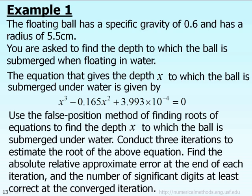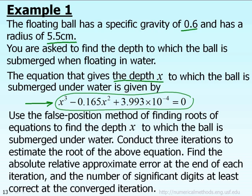A floating ball has a specific gravity of 0.6 and a radius of 5.5 cm. You are asked to find the depth to which the ball is submerged when floating in water. For this chapter it is not that important to understand how to derive the equation, but basically this equation has been derived in our textbook. The equation that gives the depth x to which the ball is submerged is shown here, which is a cubic or third-order polynomial equation.